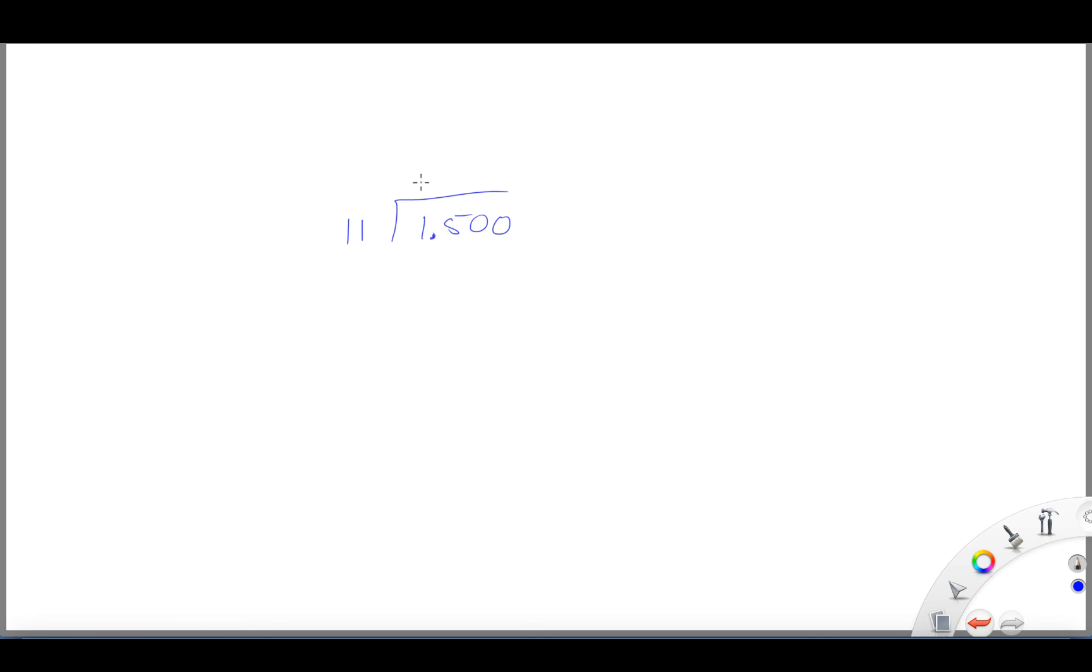Okay, so we have zero point, and then we're going to have 1, which is 11, 4, 0, we're going to have 3, which is 33.